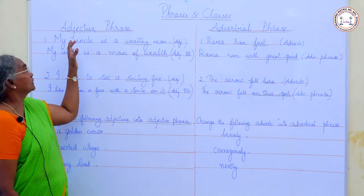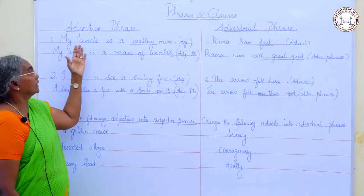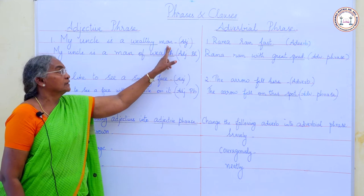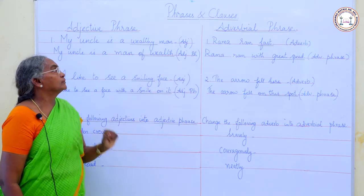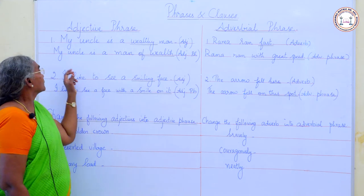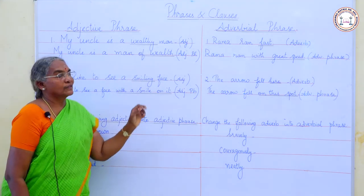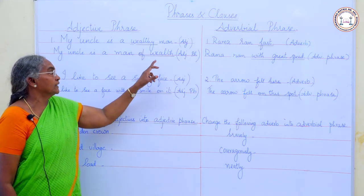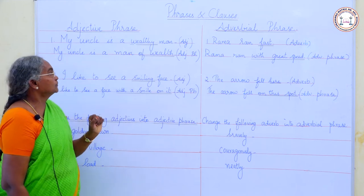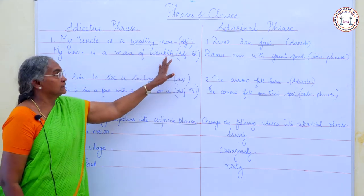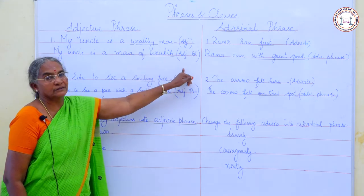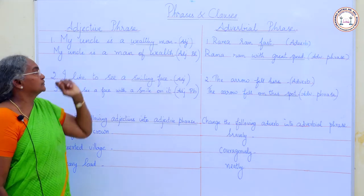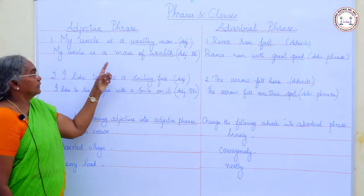Now, let us learn about adjective phrase in detail. 'My uncle is a wealthy man.' Here, 'wealthy' describes the noun 'man,' so it is an adjective. In the sentence 'My uncle is a man of wealth,' the adjective is replaced by the adjective phrase 'of wealth.' Group of words describing a noun is called an adjective phrase.